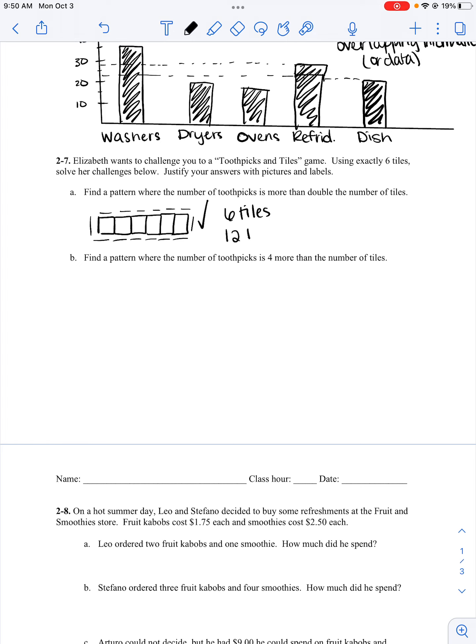I have six tiles, 12 toothpicks. Find a pattern where the number of toothpicks is four more than the number of tiles. So if I have six tiles, four more, I need 10 toothpicks. I could, I know that the one above wouldn't work. I could try this. One, two, three, four, five, six, seven, eight, nine, ten. That one won't work. Okay, that's six tiles. So one, two, three, four, five, six, seven, eight, nine, ten. That one works. I have six tiles, 10 toothpicks.